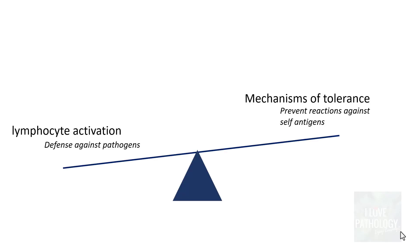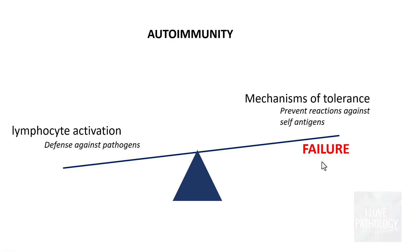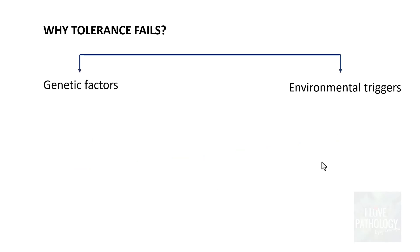The mechanism of autoimmunity in rheumatoid arthritis is the same as in other autoimmune diseases — an imbalance between lymphocyte activation and the mechanisms of tolerance. Basically, there is a failure of tolerance mechanisms which leads to autoimmunity.